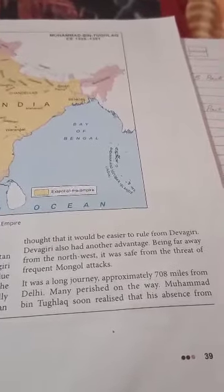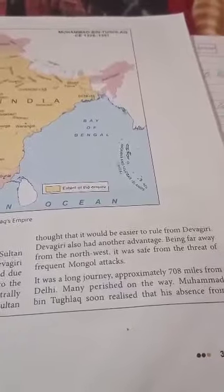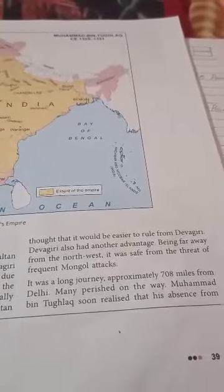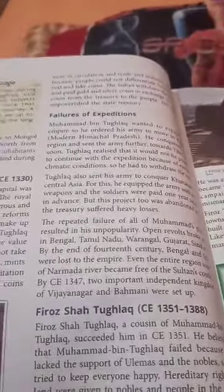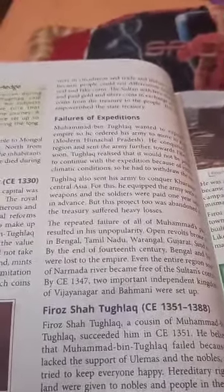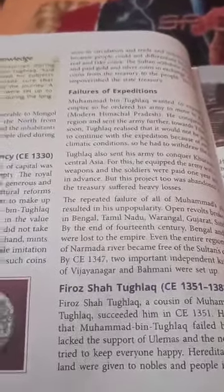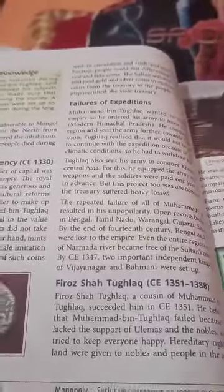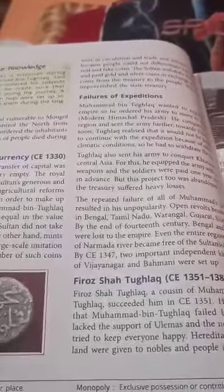Being far away from the northwest, Devagiri was also safe from the threat of Mongol attacks. However, it was a long journey — around 708 miles from Delhi. Muhammad bin Tughluq soon realized that his absence from Delhi made the capital more easily approachable to the Mongols and he could not control the north from Devagiri. So he ordered a return to Delhi, but thousands of people died during the return journey. Again, it was a failure.